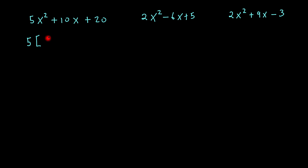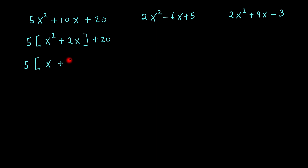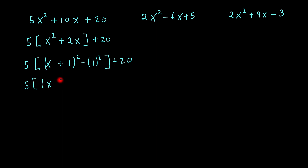Then that would give me x squared plus 2x plus 20. So the next step would be to open my brackets inside here and complete the square. So I would bring the x down and bring the sign down, which is a plus, half the 2 — the coefficient of x — which is 1. Square that, then subtract the 1 squared, and of course add the 20.